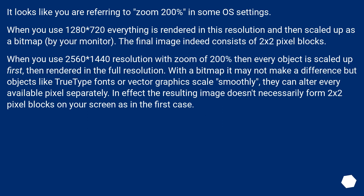When you use 2560×1440 resolution with zoom of 200%, every object is scaled up first and then rendered in the full resolution. For bitmaps it may not make a difference, but objects like TrueType fonts or vector graphics scale smoothly — they can alter every available pixel separately. The resulting image doesn't necessarily form 2×2 pixel blocks on your screen as in the first case.